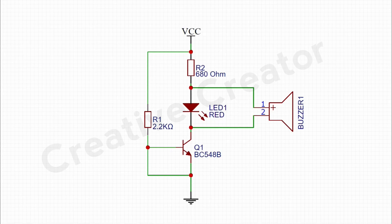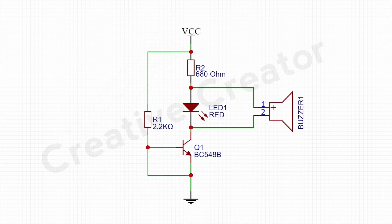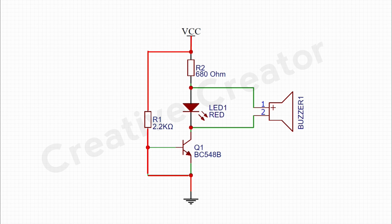Let's talk about the circuit diagram first. Here I have used BC548 NPN transistor. You can also use any same type of NPN transistor like BC547. For this case, the base and the emitter pin are short circuited, which means that the current flows from VCC to the ground through 2.2K resistors. No current will flow into the transistor's base, so the transistor will act like an open circuit.